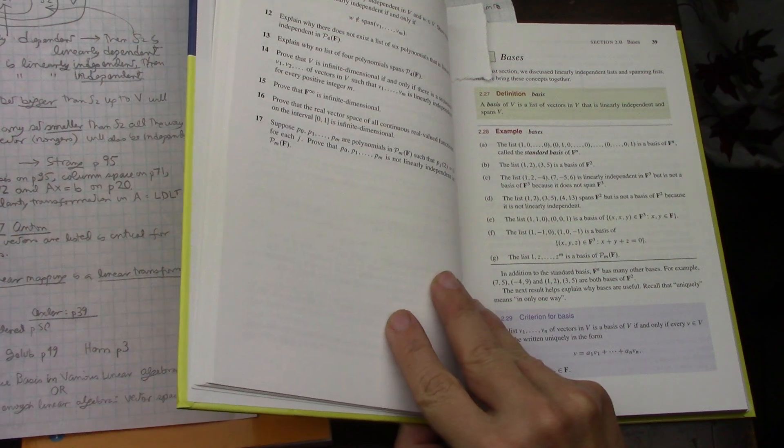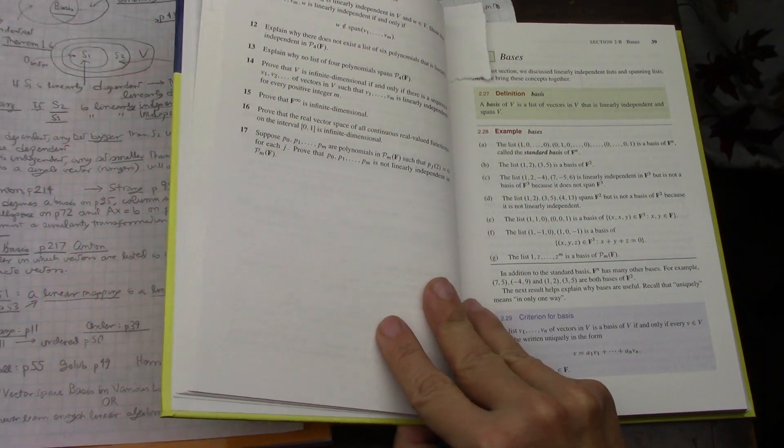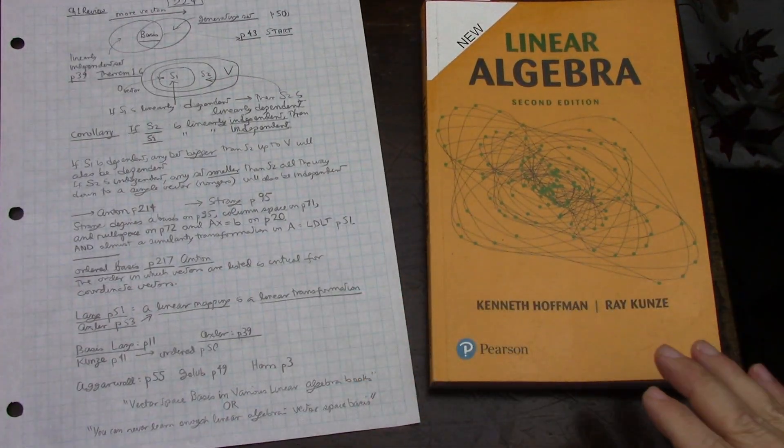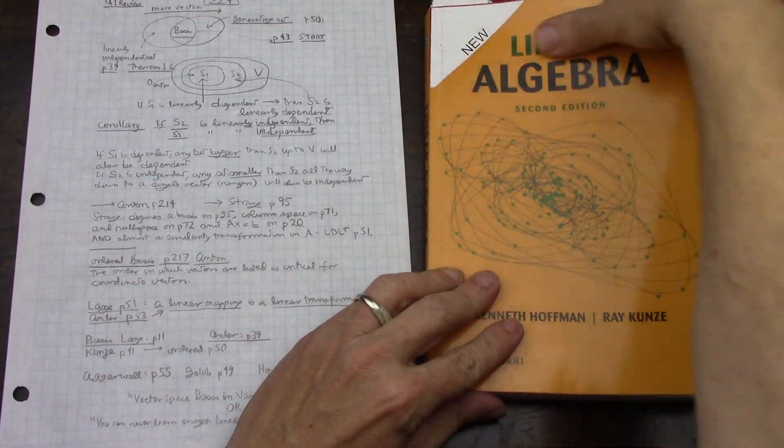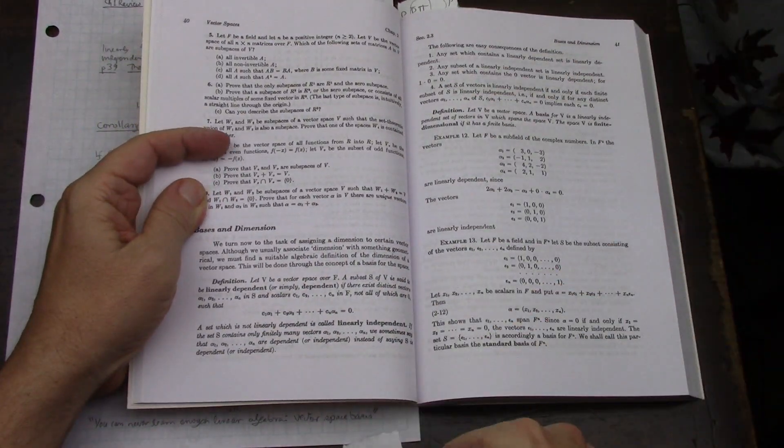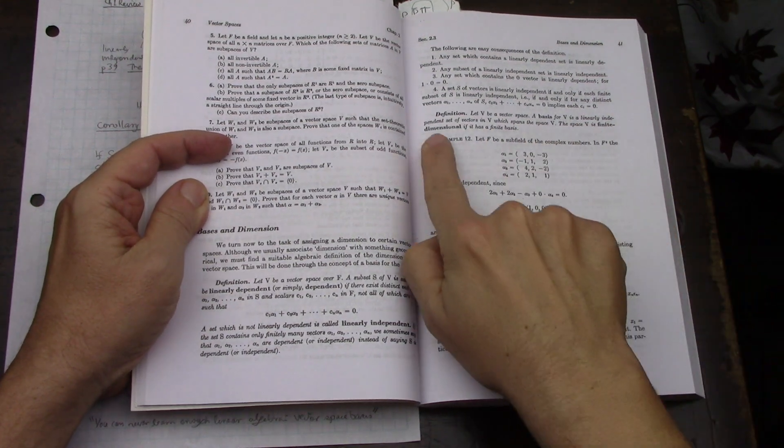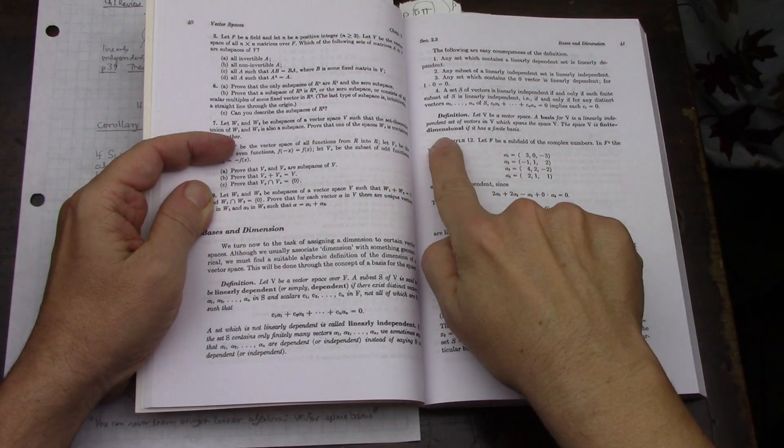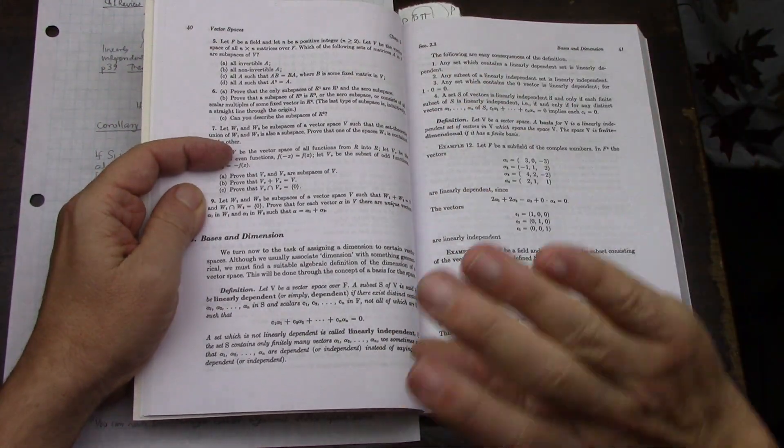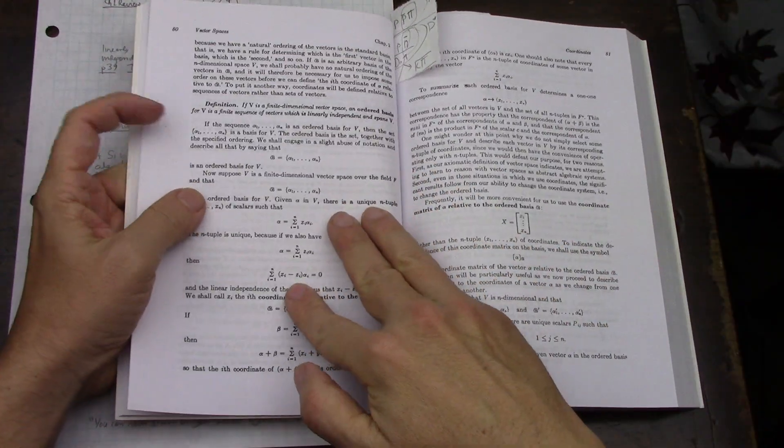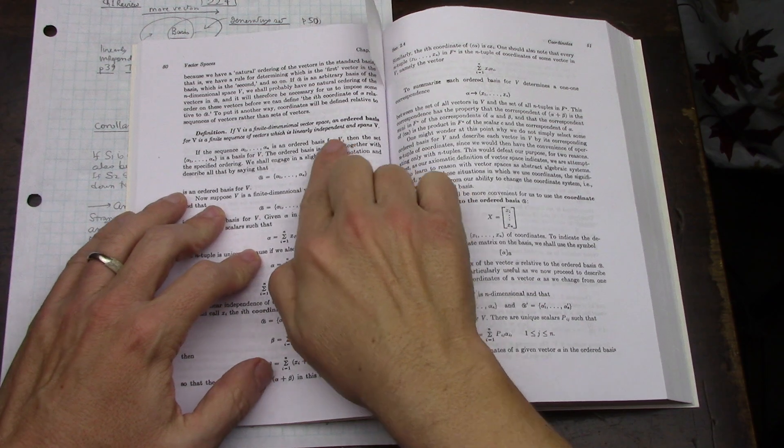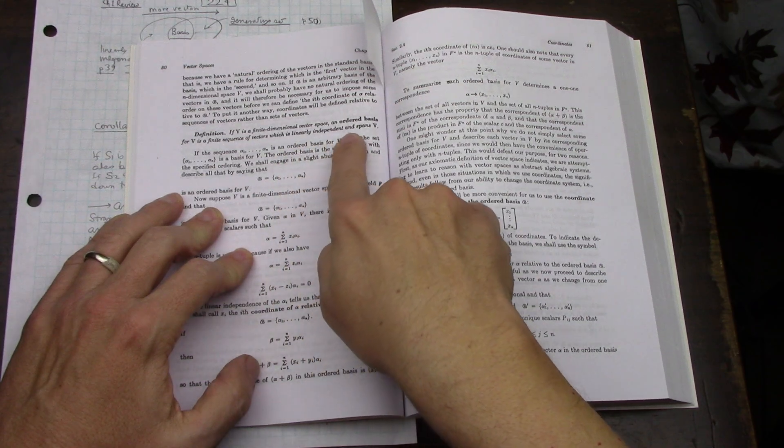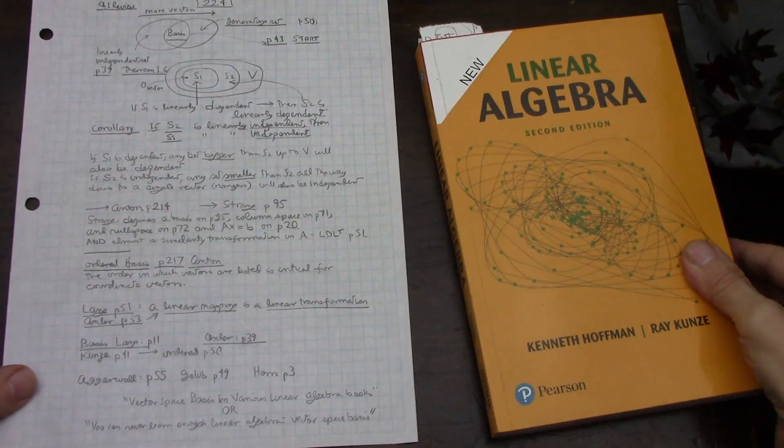The next stop on the tour goes to Hoffman & Kunze. In this case, we go to page 41. A basis for V: a linearly independent set of vectors that spans the space V. V is finite dimensional if it has a finite basis. He's already kind of going through like, hey, it could be infinite. And of course, he also defines the ordered basis: a finite sequence of vectors which is linearly independent and spans V. Same thing, just ordered.